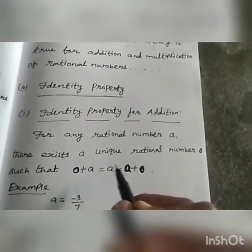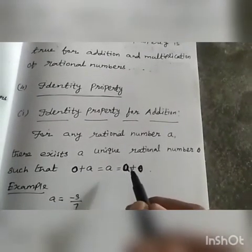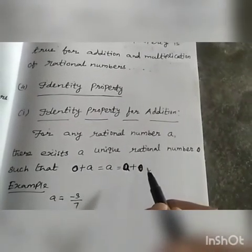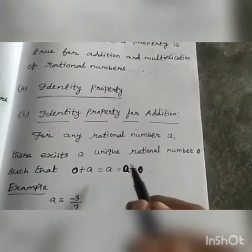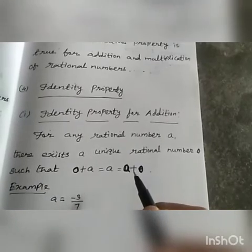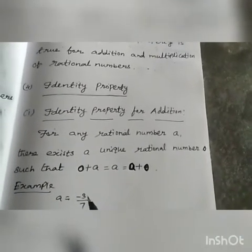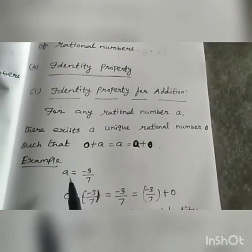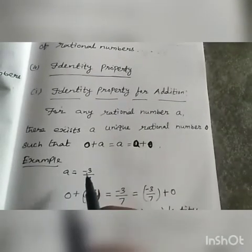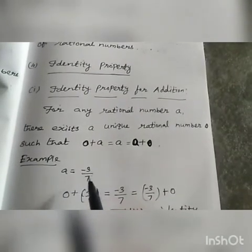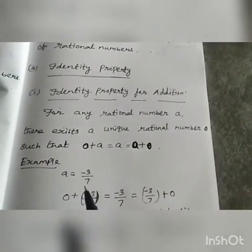Here 0 + A, and here A + 0 — the order only changes. Now we see an example. For example, we take A = -3/7.